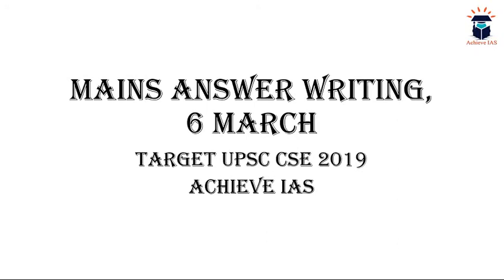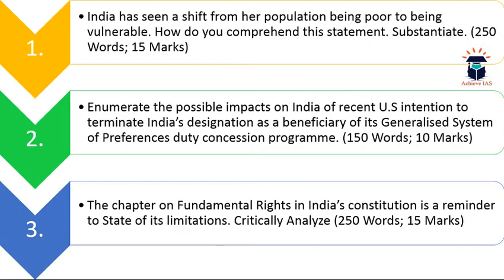Today is 6th March. The first question is: India has seen a shift from her population being poor to being vulnerable. How do you comprehend this statement? Substantiate. The word limit is 250 and the marks allotted are 15.